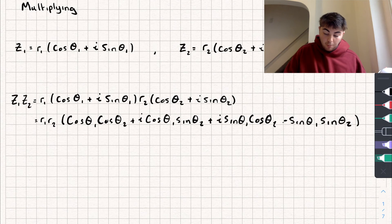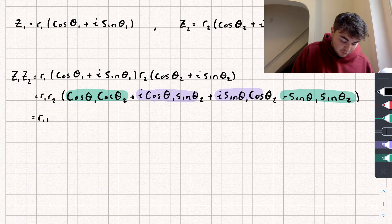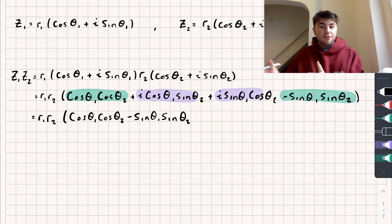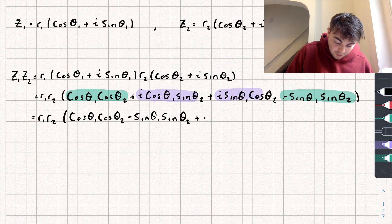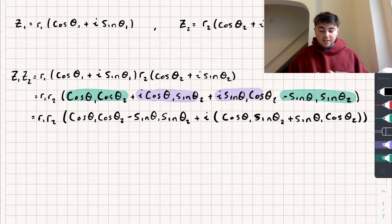Now I'm going to collect the real parts and the imaginary parts together. So we get r1·r2 times the real part: cos theta1·cos theta2 minus sine theta1·sine theta2, plus i times — factoring i out from both imaginary parts — cos theta1·sine theta2 plus sine theta1·cos theta2.